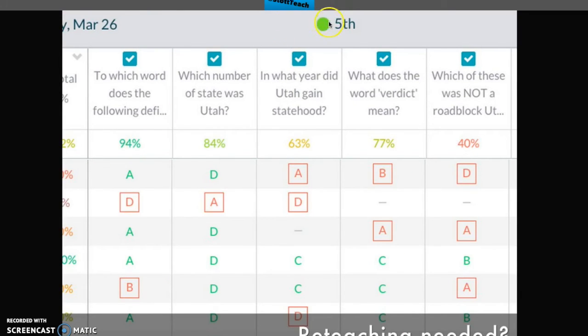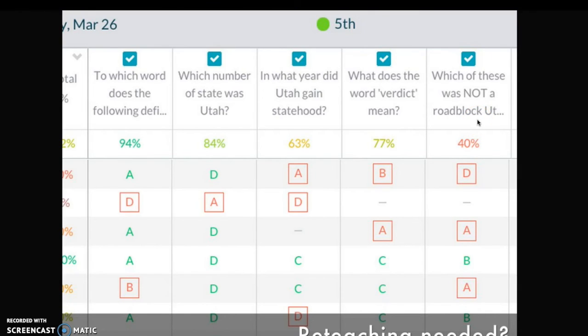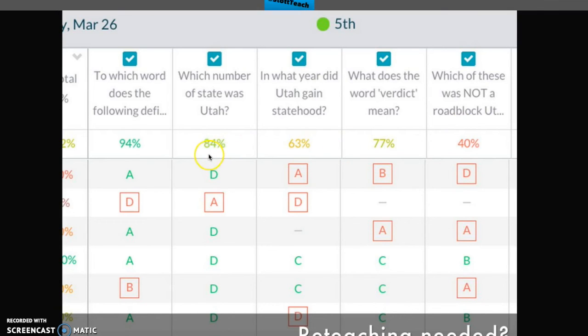If I go to my fifth period, I can see that they did a really poor job on this question. Only 40% of them got it right. So, then I know this is something I need to reteach, the roadblocks that kept Utah from becoming a state. Whereas, most of these other questions, they did good. I might recover this subject as well.